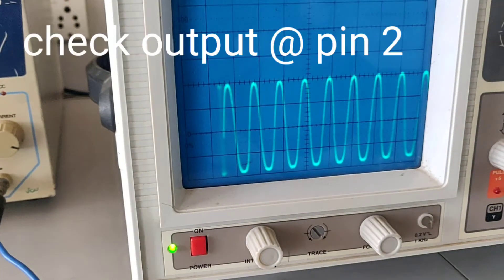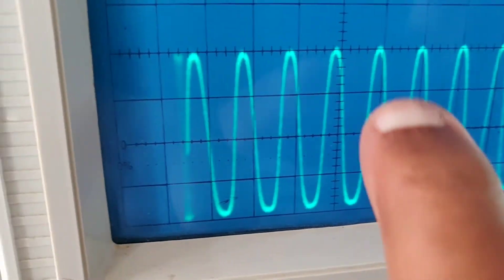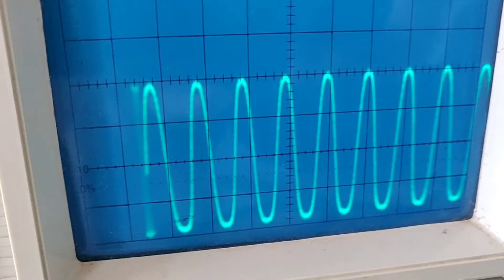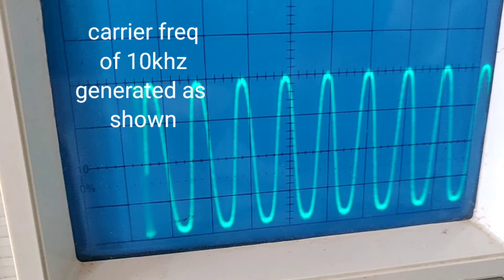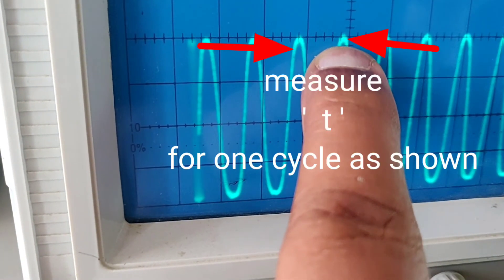Now, see the output at pin number 2. A sine wave is generated. And measure the frequency. First, measure the time period for one cycle. And it is clearly seen that it is one division multiplied with 0.1 ms. It means exactly 10 kHz according to our design.